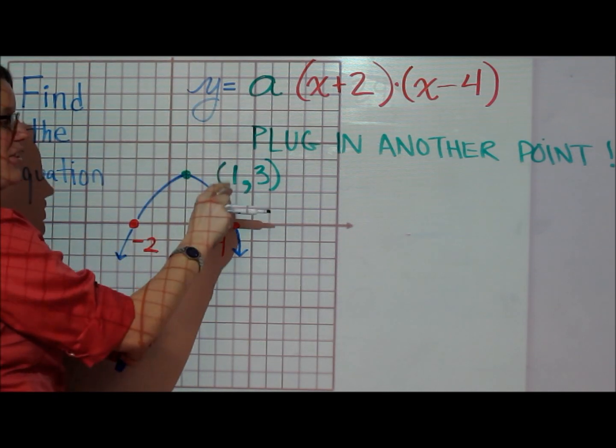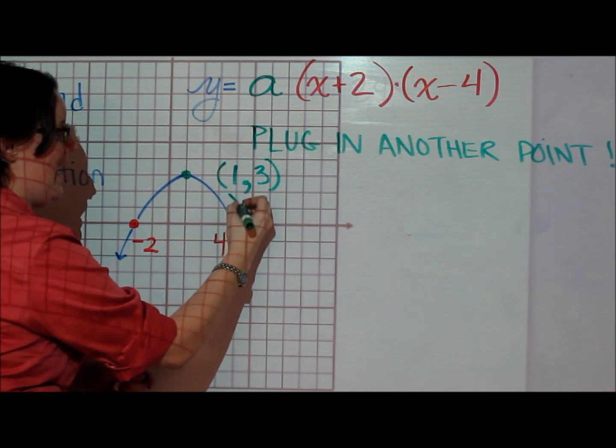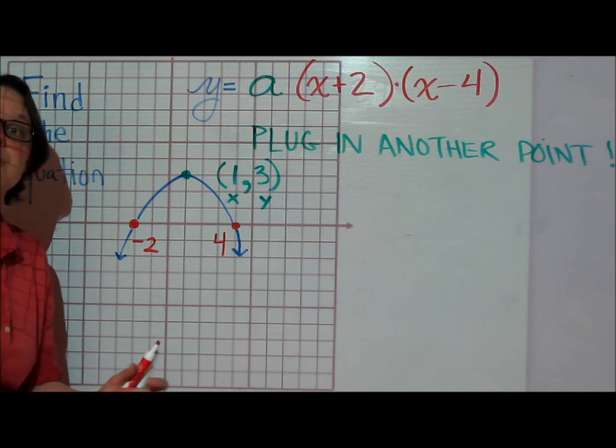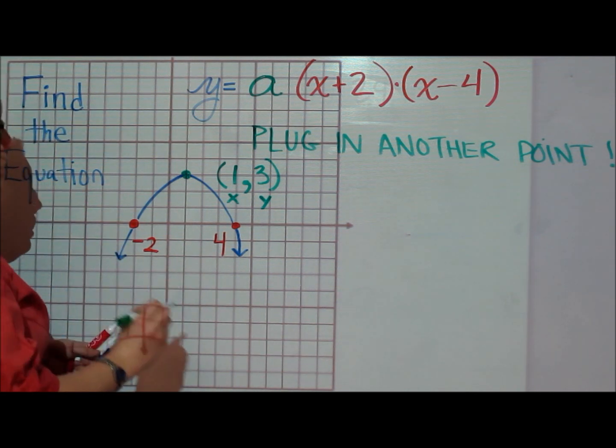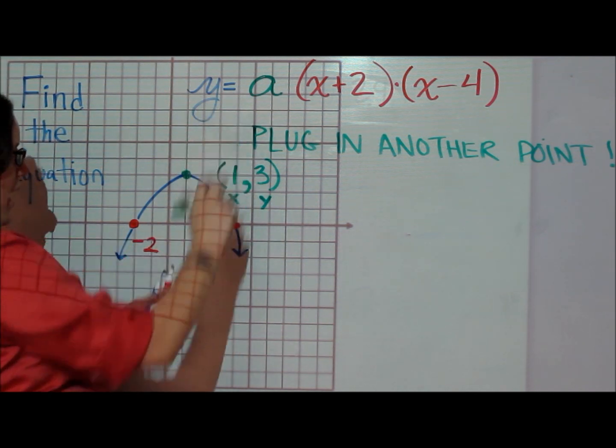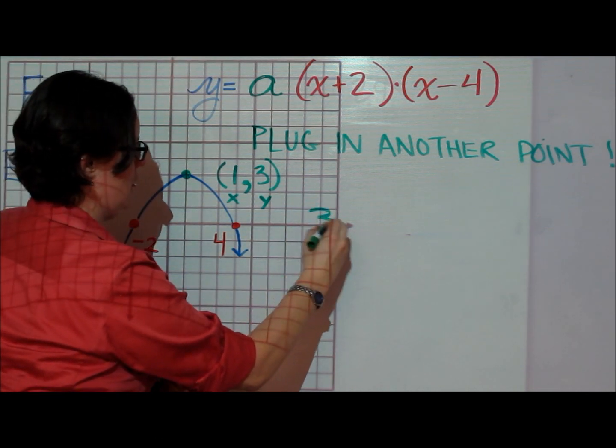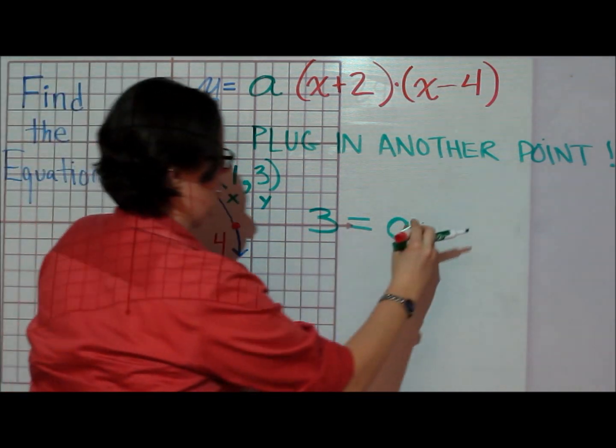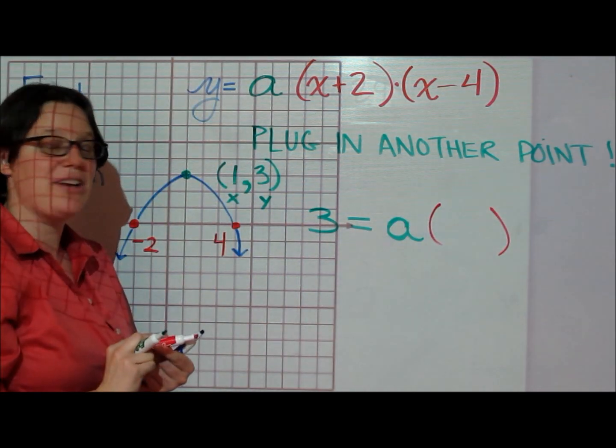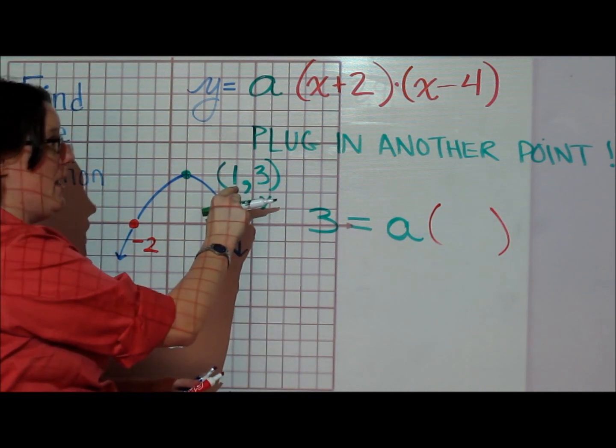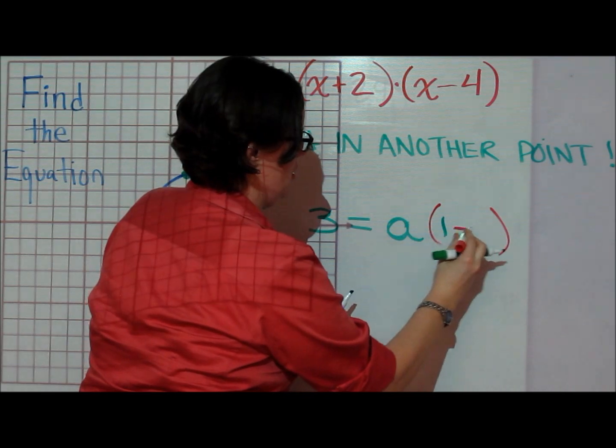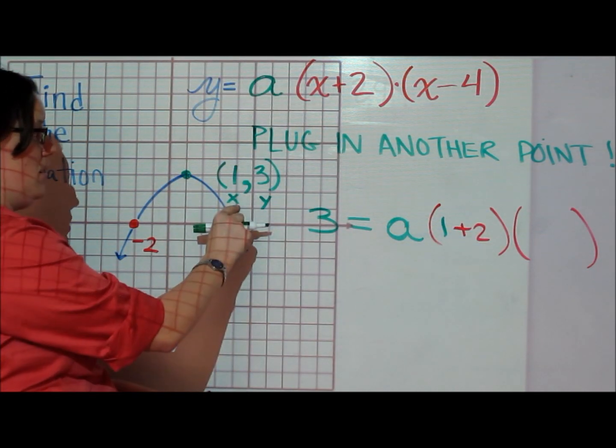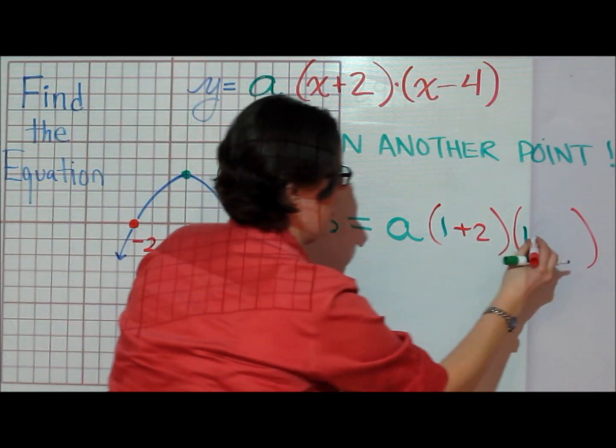So everywhere that there's an x in my equation, I'm going to put in an x of 1. Everywhere there's a y in my equation, I'm going to put in a y of 3. That looks like y becoming 3, a staying put—that's what I'm trying to find. The factor x plus 2 becoming 1 plus 2, and the factor x minus 4 becoming 1 minus 4.